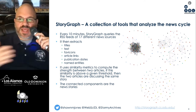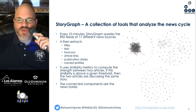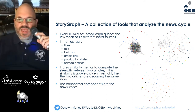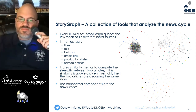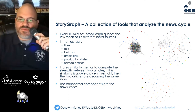Storygraph is a collection of tools that analyze the news cycle. Every 10 minutes, Storygraph queries the RSS feeds of 17 different news sources and extracts a variety of information, including titles, text, favicons, article links, publication dates, and named entities. It uses similarity metrics to compute the strength between two articles to see if they're covering the same story. If the similarity is above a given threshold, the two articles are talking about the same story, and these connected components are the news stories.